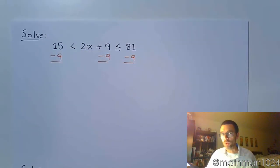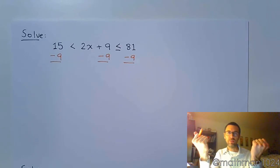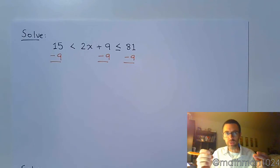Please keep in mind your goal. Your goal is to get the variable by itself in the middle. Because once it's by itself, you're going to see what it's in between. It's in between this number and that number, which leads you straight to your number line, which then leads you straight to your interval notation.